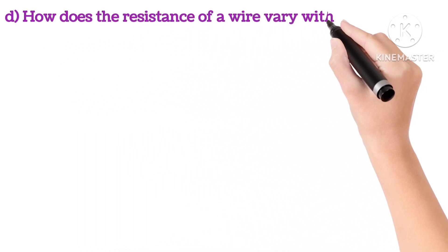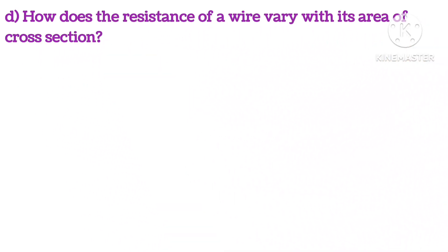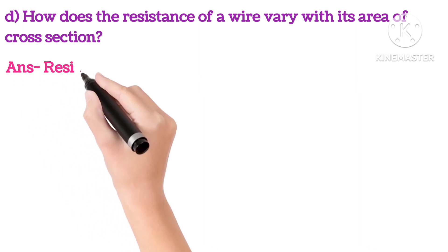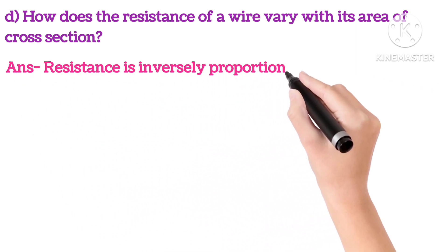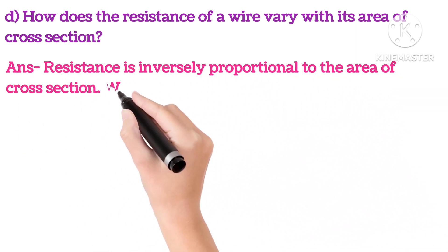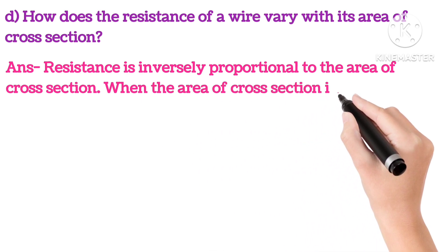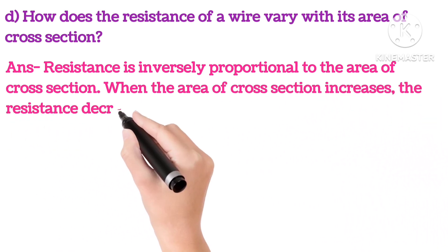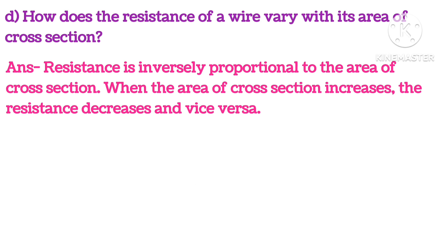D: how does the resistance of a wire vary with its area of cross-section? Answer is: resistance is inversely proportional to the area of cross-section. So when the area of cross-section increases, the resistance decreases and vice versa.